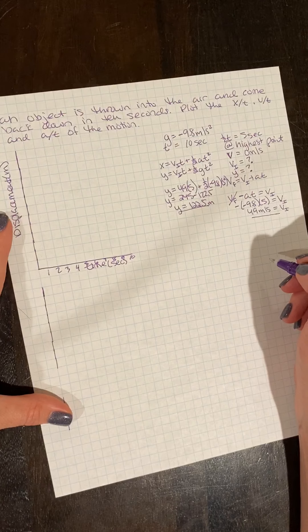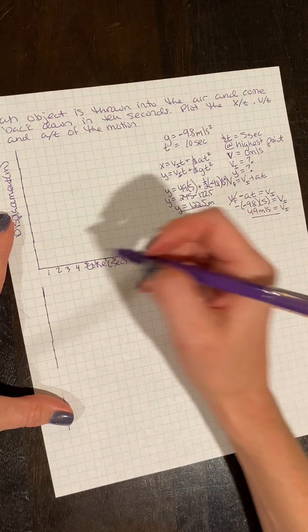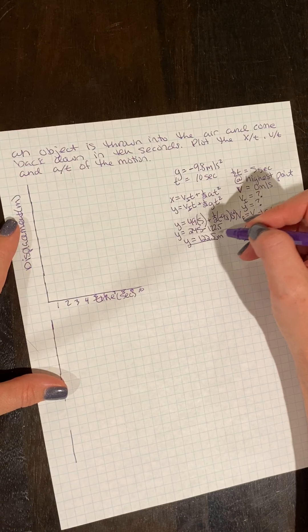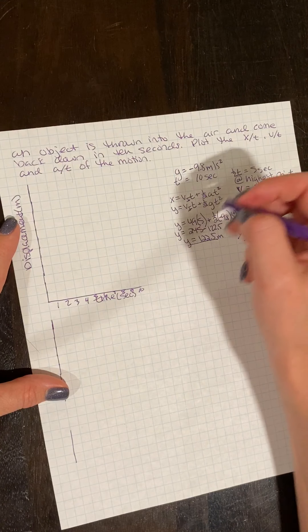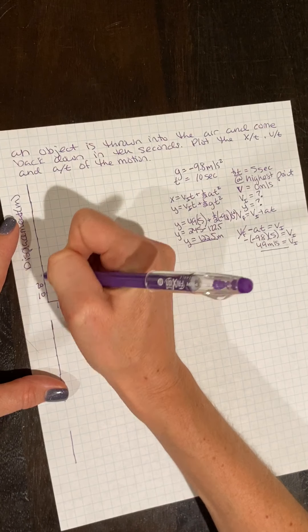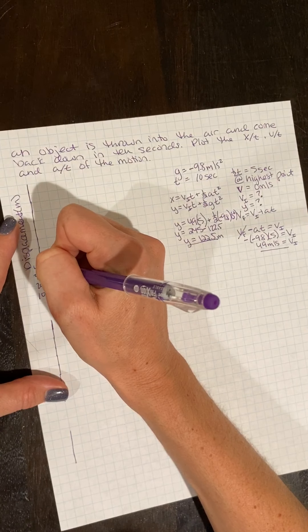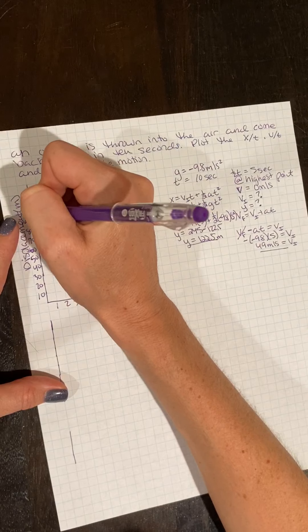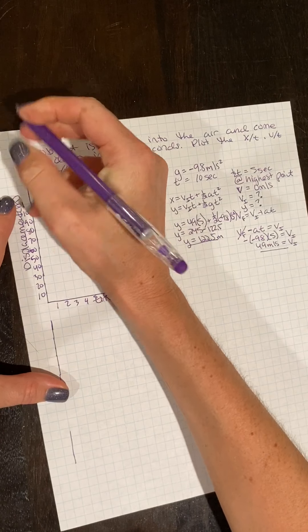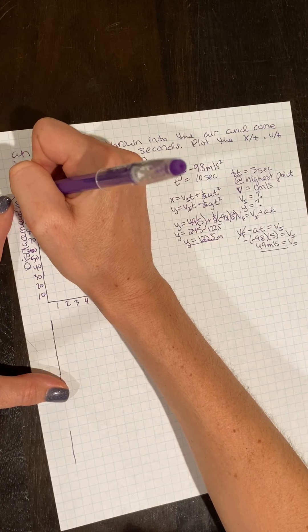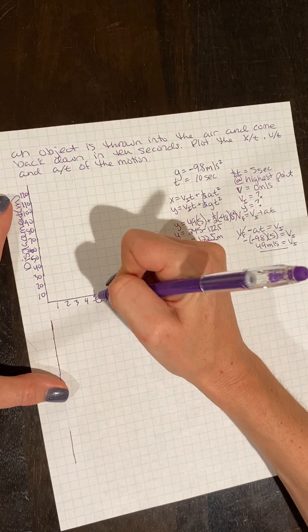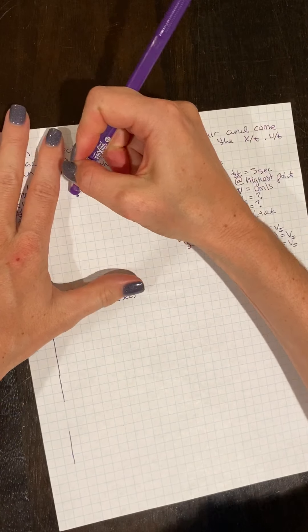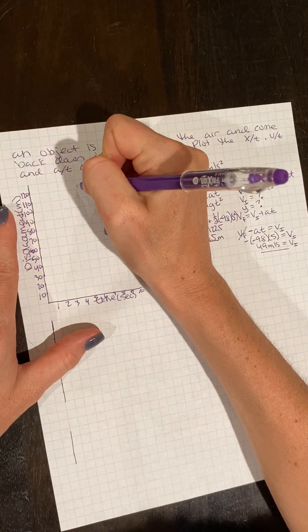So all my graphs are going to be to 10 seconds. So we figured out our max displacement was 122.5. I'm going to go by 10s. And I know at time, 5 seconds, we figured out we were at 122.5. So I need to go up one more.